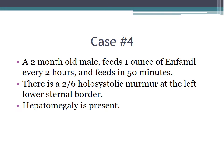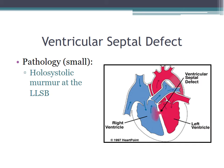Case four: a two-month-old male who feeds one ounce of Enfamil every two hours and takes about 50 minutes per feeding. There is a two out of six holosystolic murmur at the left lower sternal border and hepatomegaly. The diagnosis is a VSD, which is the most common type of congenital heart defect. Small VSDs present with a holosystolic murmur at the left lower sternal border.